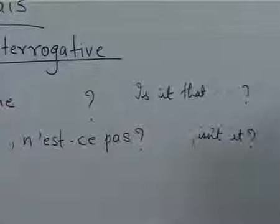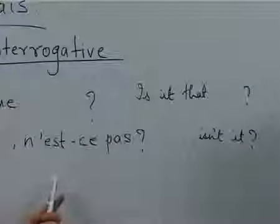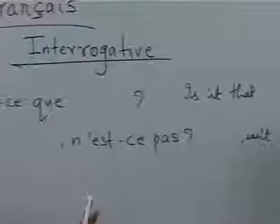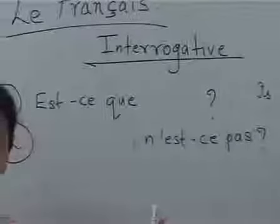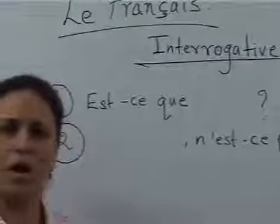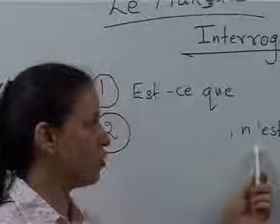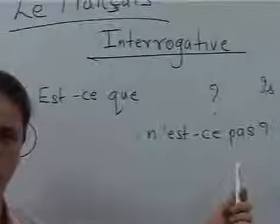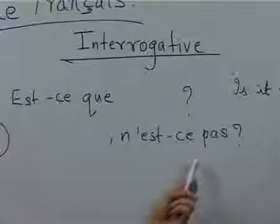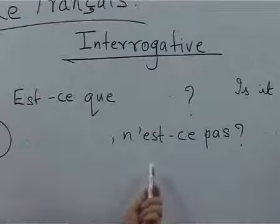Now, in French this is a very simple method, because in English we use haven't they, don't they, isn't he, aren't we. So we use different question tags depending on the verb used, but here we have a common question tag, that is n'est-ce pas, isn't it?